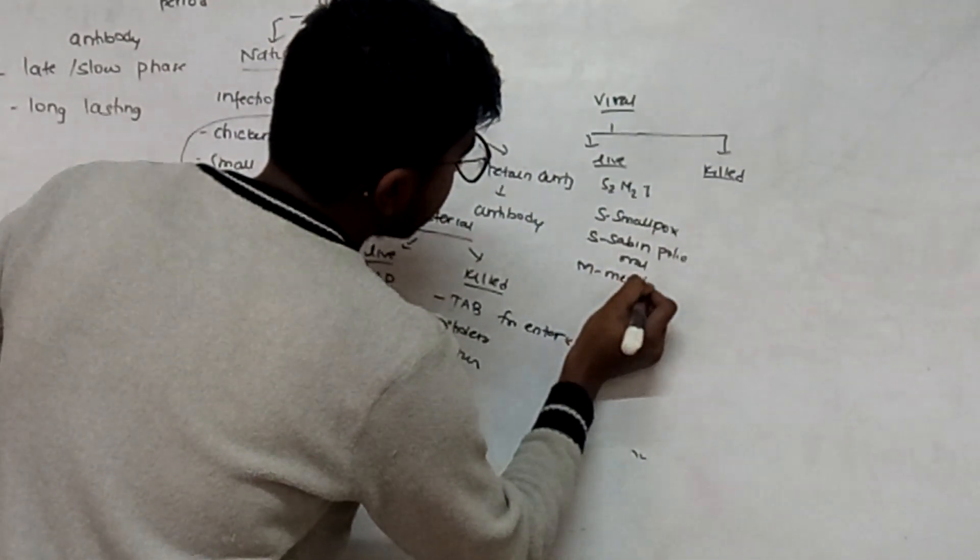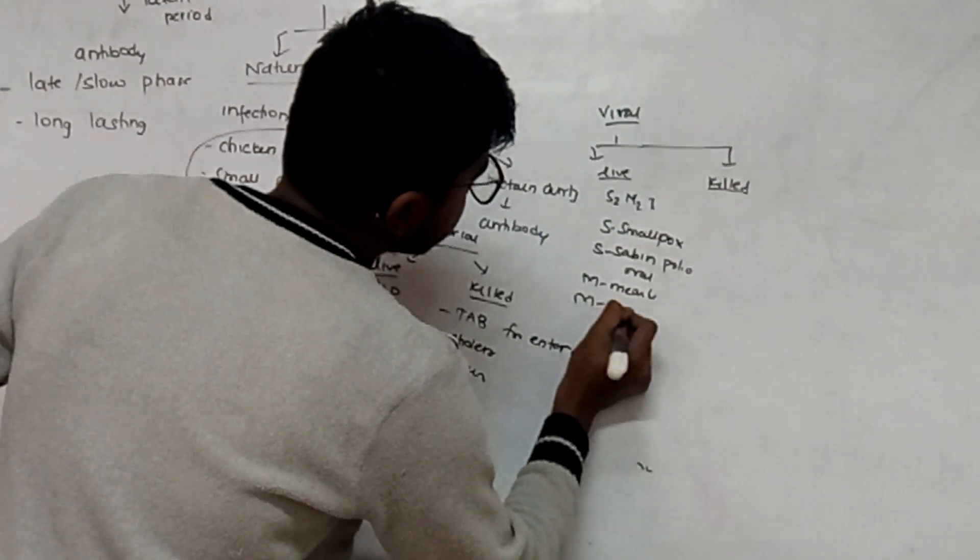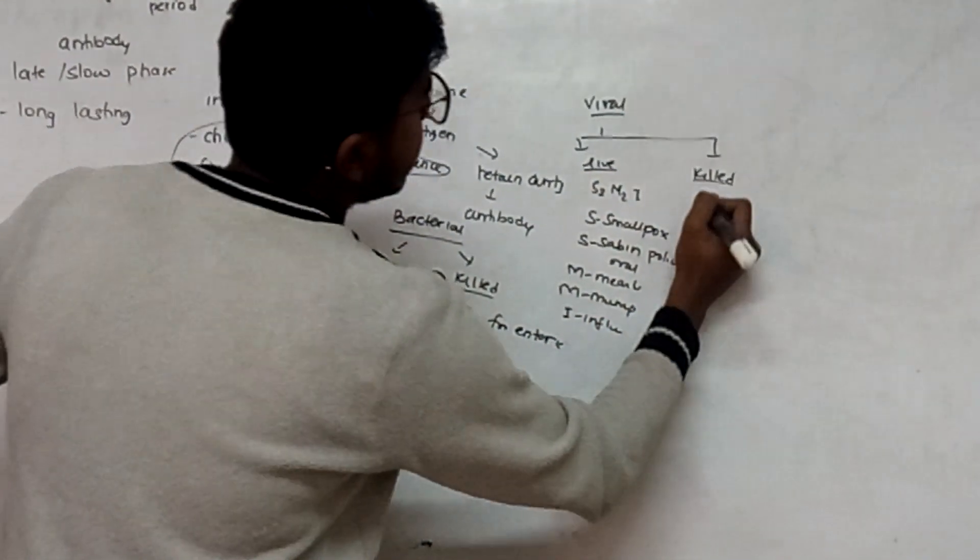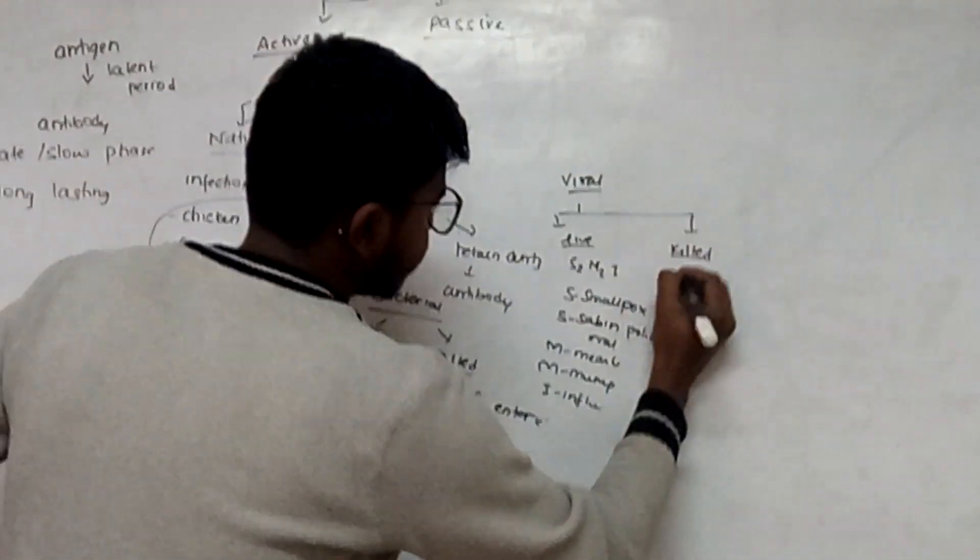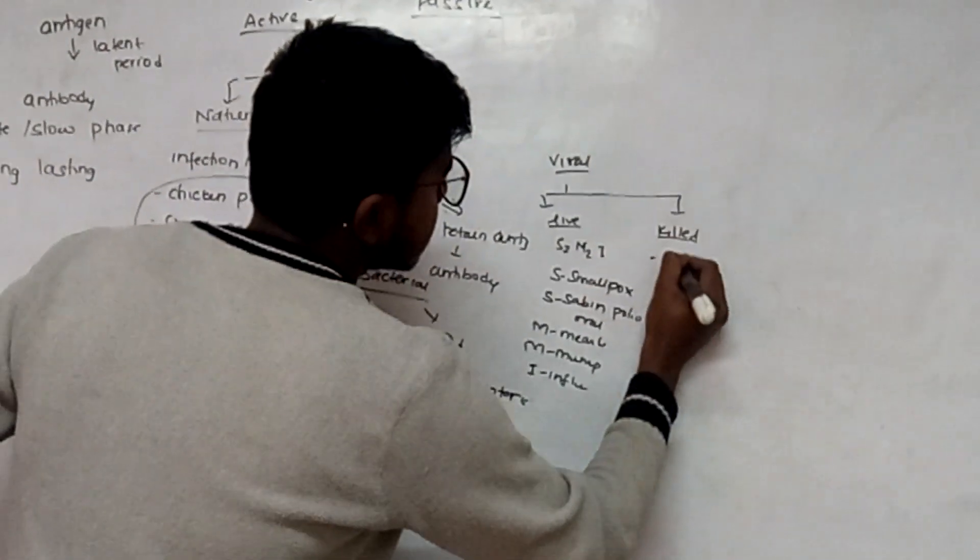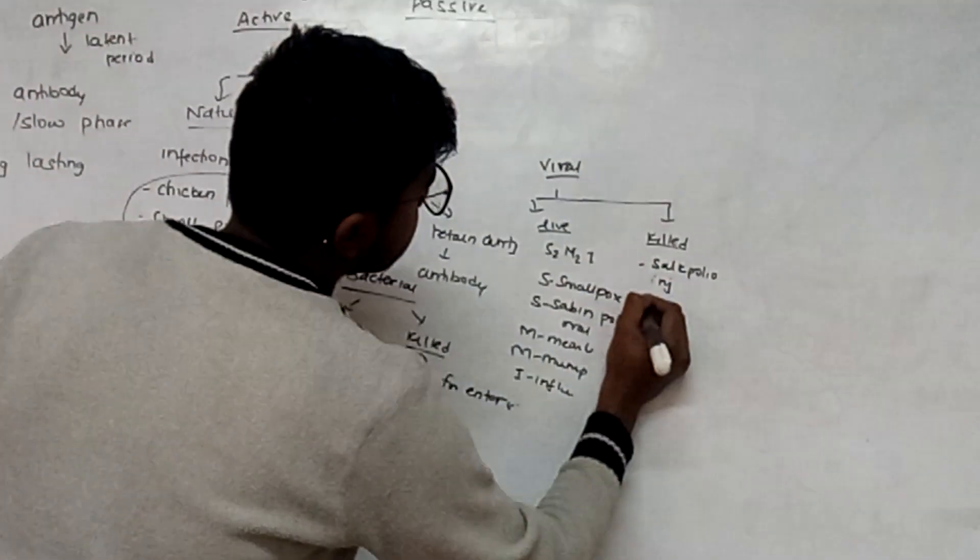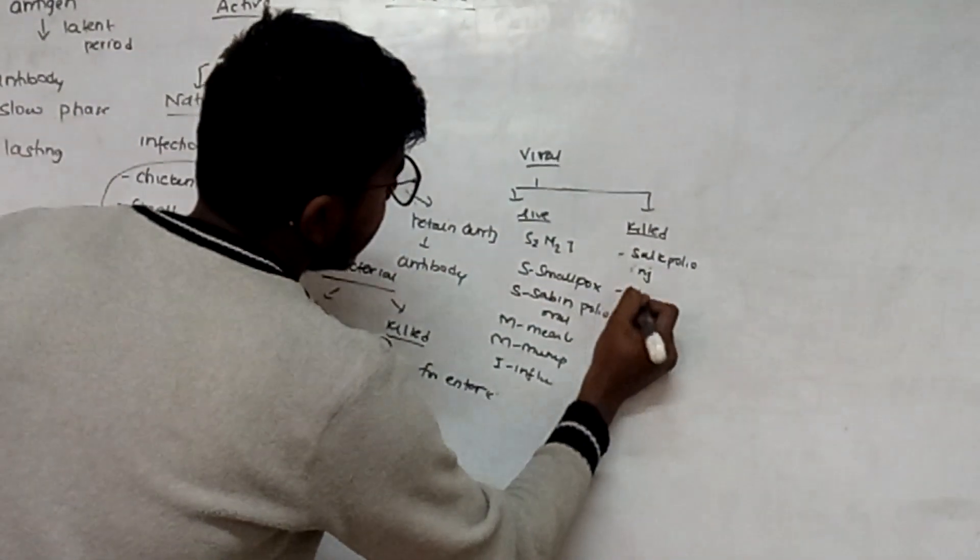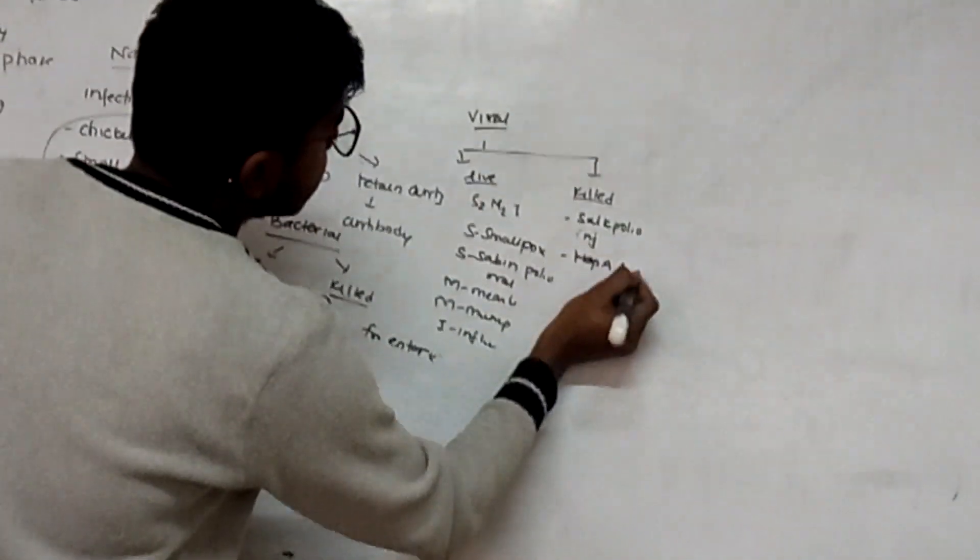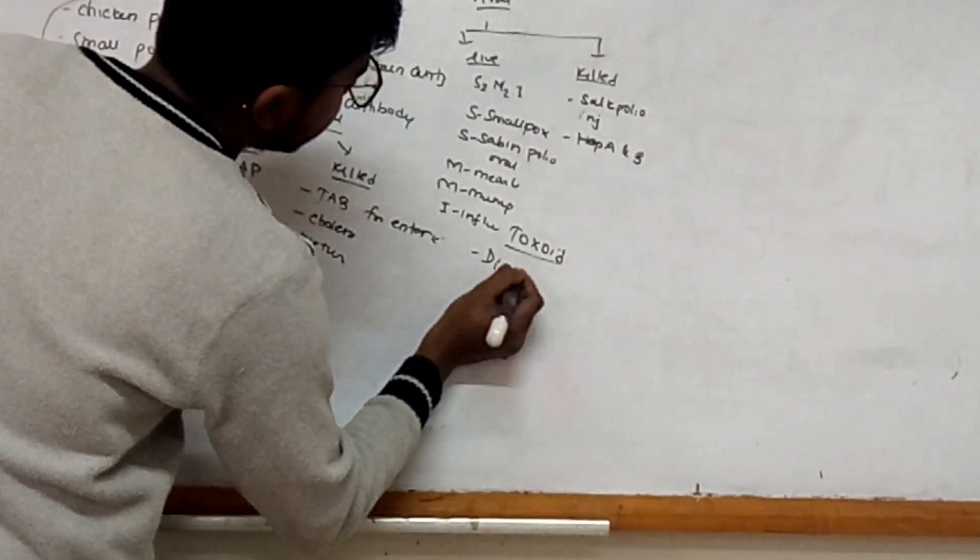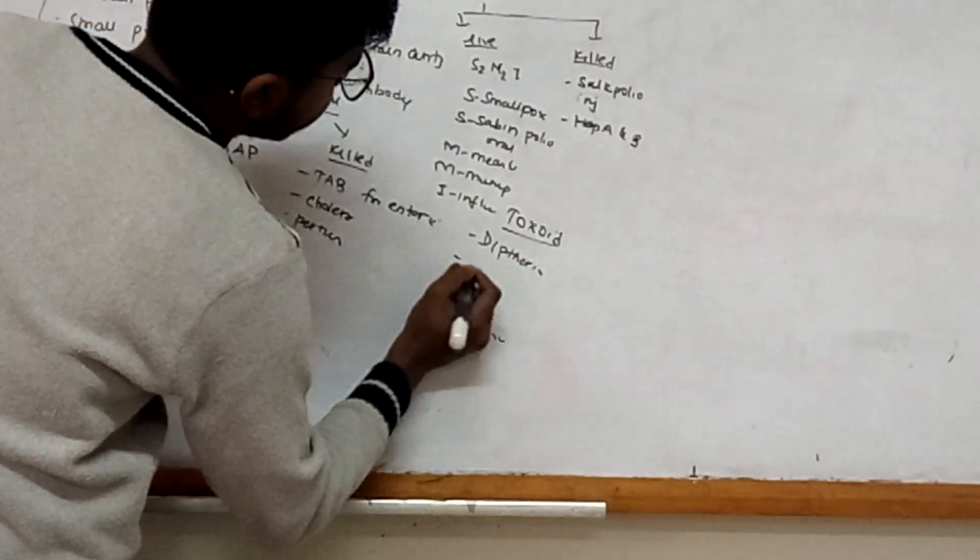Killed is mainly Salk polio, that is injectable, and hepatitis A and B. Lastly is the toxoid form - toxoid is for diphtheria and tetanus.